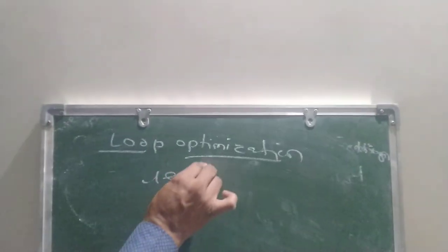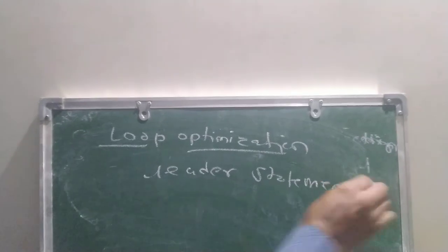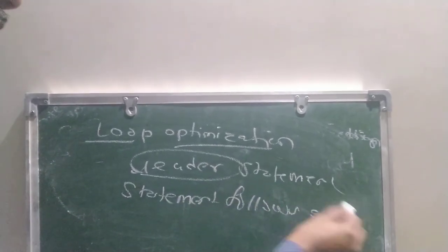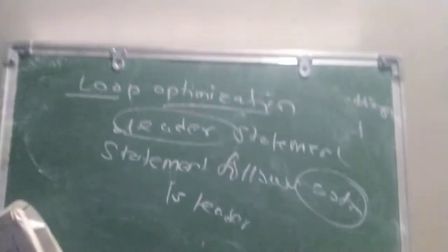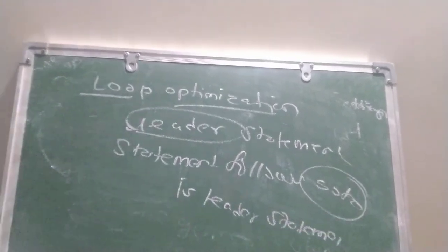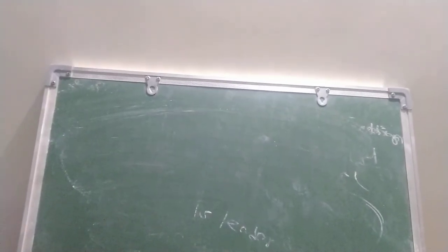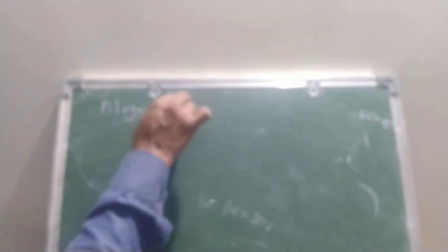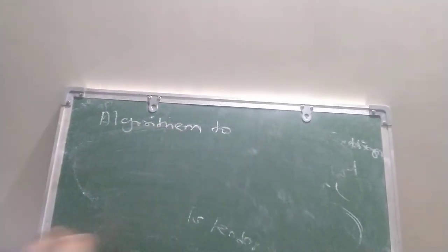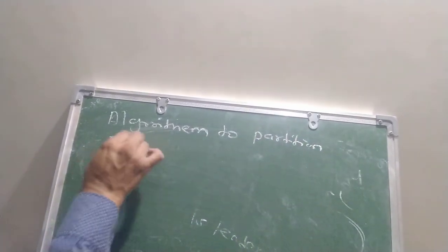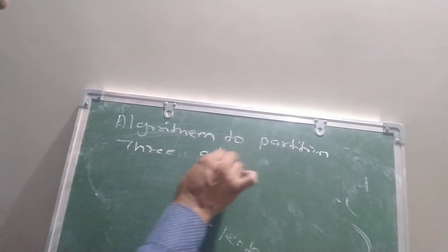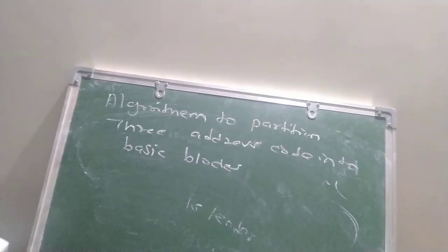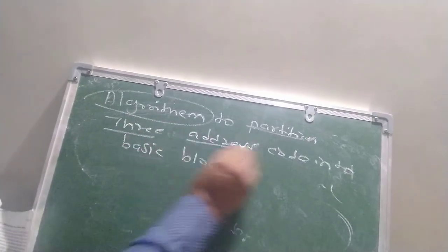A leader statement is the statement that follows a goto. In this way, we will find the leader statements. Next is the algorithm to partition the three-address code into basic blocks.